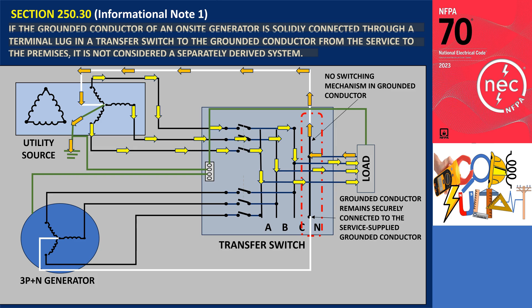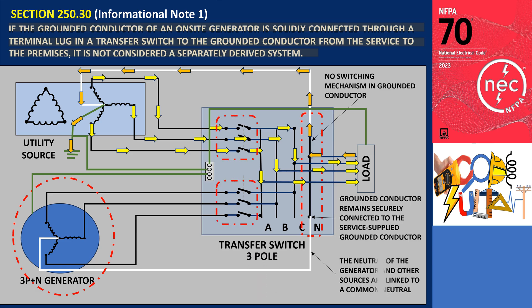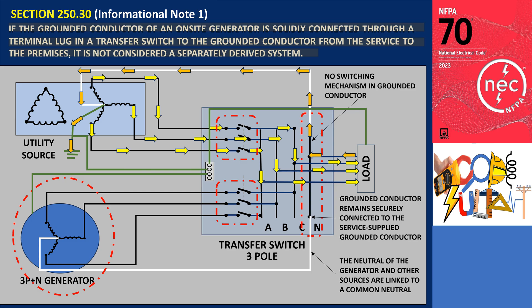This means in the case of a generator configured with three poles plus neutral, if the transfer switch utilized comprises only three poles, the neutral of the generator and other sources are linked to a common neutral. The neutral conductor is firmly interconnected to a grounded neutral conductor supplied by the service system. If the neutral of this generator were bonded to the frame and connected to the grounding system of the premises, an objectionable current would flow to the neutral conductor of the generator. That bonding point is prohibited by section 250.24. If only three poles are utilized, the generator is not classified as a separately derived system.